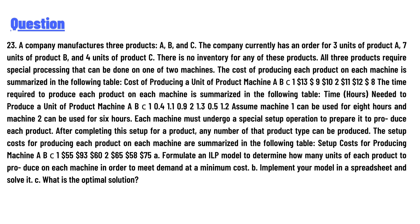Each machine must undergo a special setup operation to prepare it to produce each product. After completing this setup for a product, any number of that product type can be produced. The setup costs for producing each product on each machine are: Machine 1: A=$35, B=$93, C=$60; Machine 2: A=$65, B=$58, C=$75.